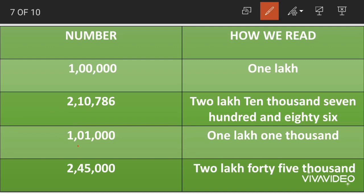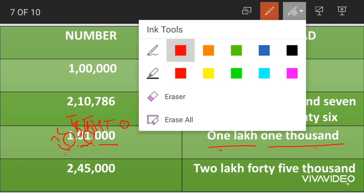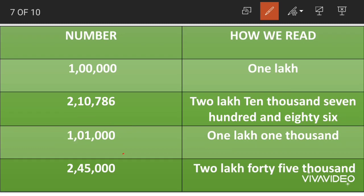The third number is 1,01,000. Place values: ones, tens, hundreds, thousands, ten thousands and lakhs. The place values of zeros are always zero. The first 1 is at lakhs place — read as one lakh. The second 1 is at thousands place — read as one thousand. So 1,01,000 is read as one lakh one thousand.